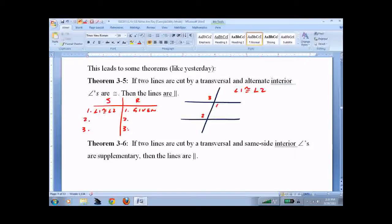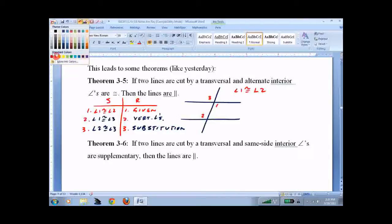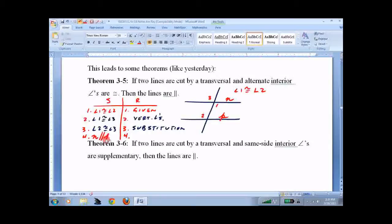I would pause the recording and try it yourself. So I would say angle 1 is congruent to angle 3 because of vertical angles. And then I would say angle 2 is congruent to angle 3 by substitution. And you might be tempted, because that's what I just drew, to say, oh, I'm done. But you're not done. You have to prove that these lines are parallel. We'll call it line n and line p. Yes, I know how to make a script p. So then you would say n is parallel to p.